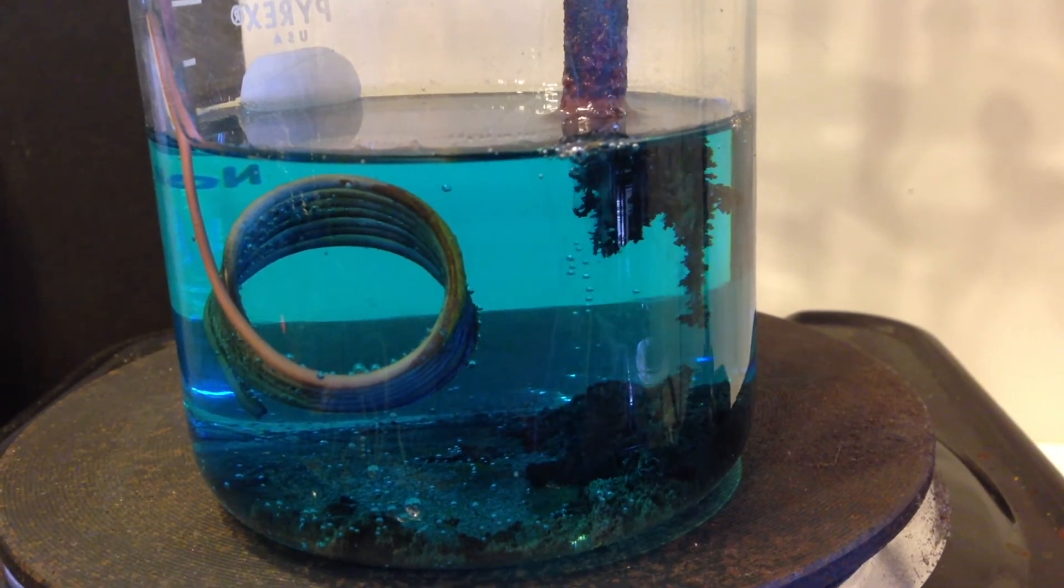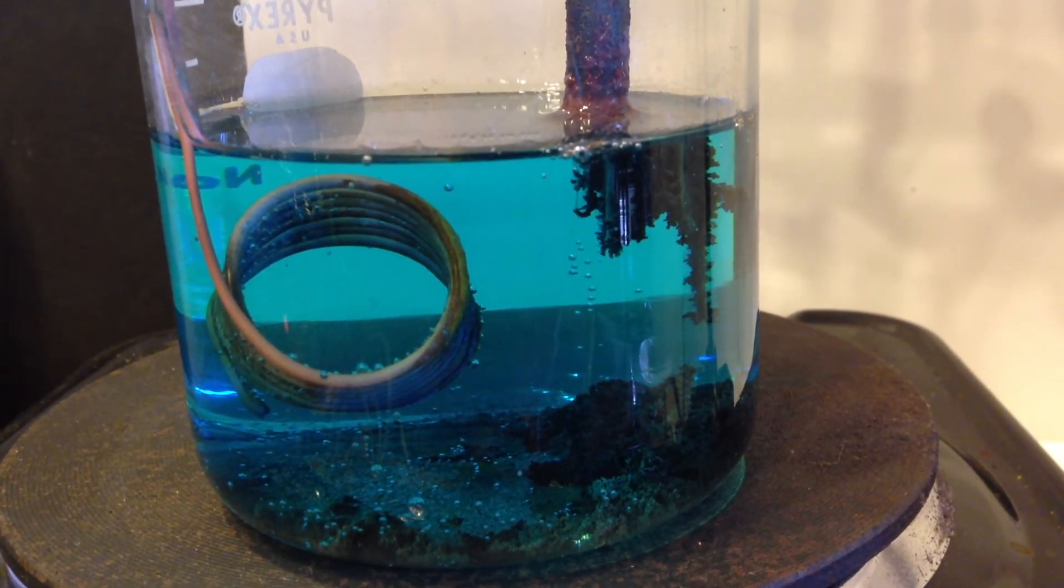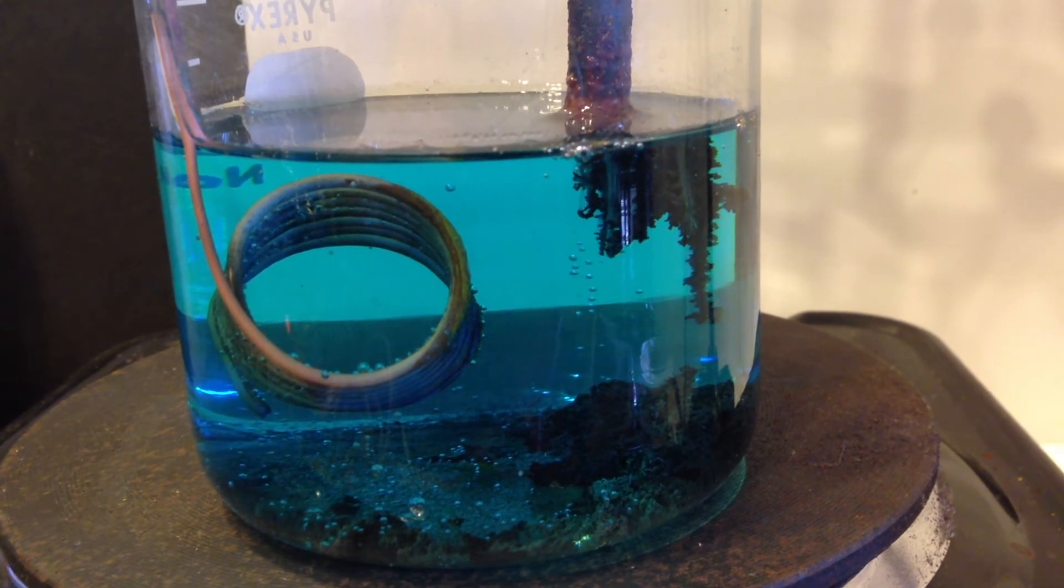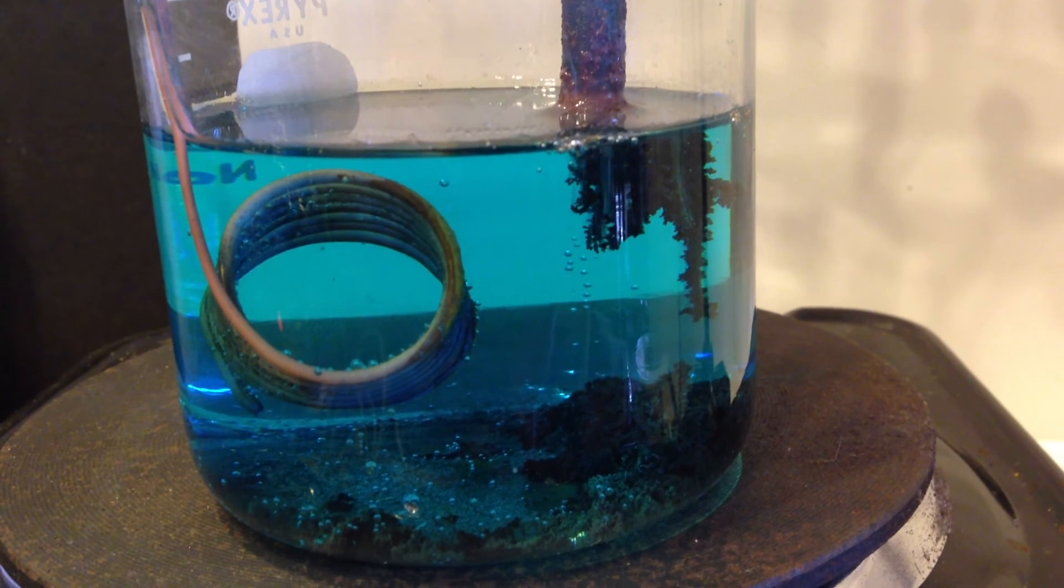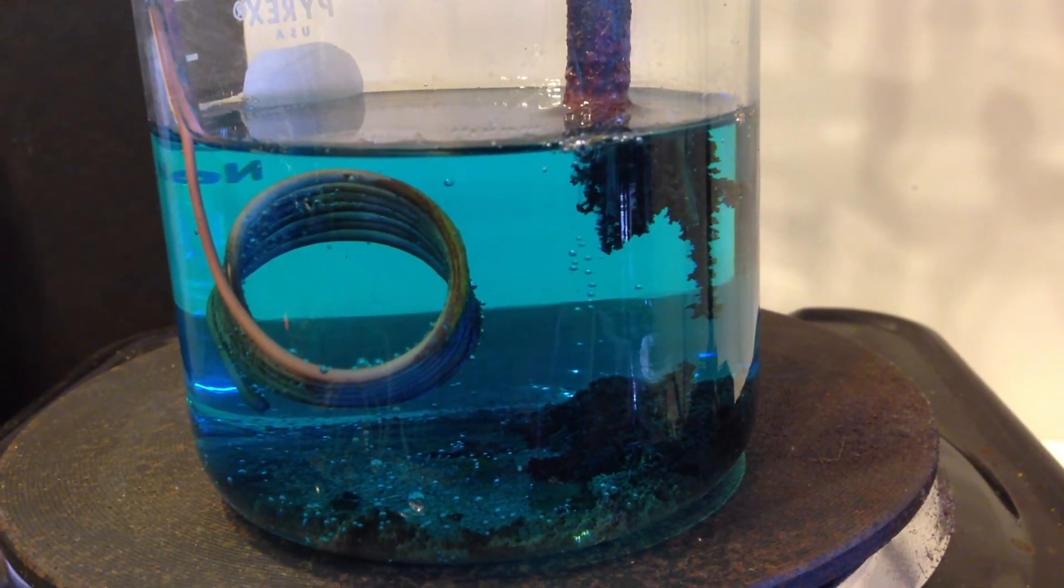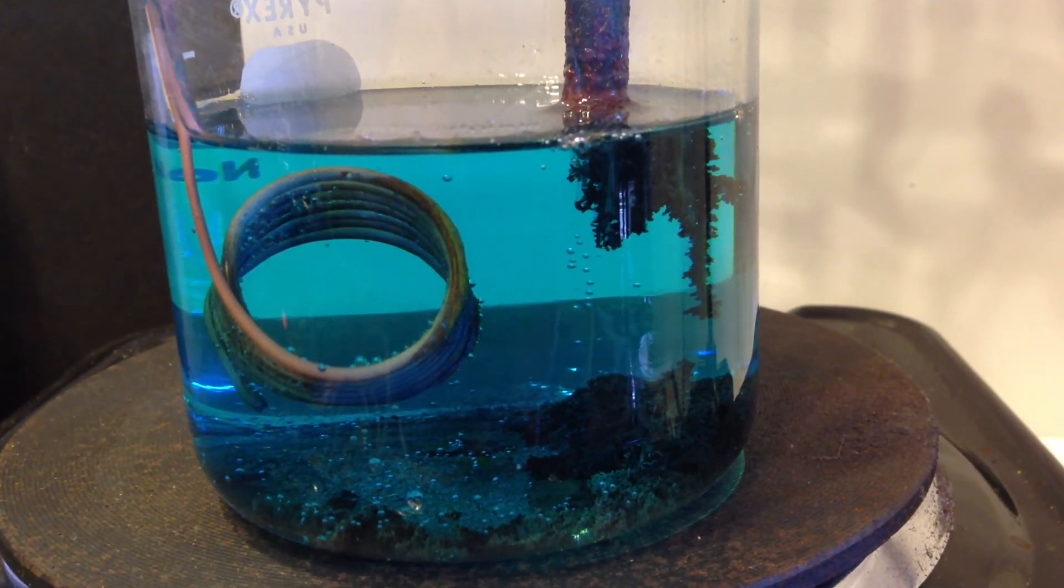So the chunks fall off and they make that pile down at the bottom. And now you can see the new pieces still being produced. And there's still quite a bit of force that propels them towards the coil.